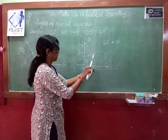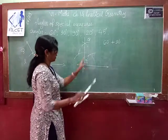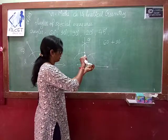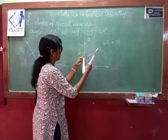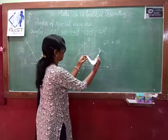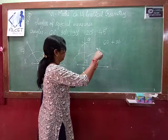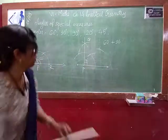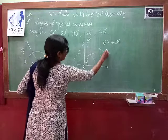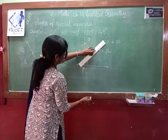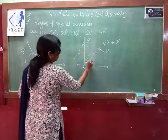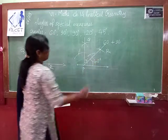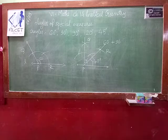To bisect the 90 degree angle, take the full measurement from one arm to the other and draw an arc. Then from the other point draw another arc. You get one intersecting point — join it to the vertex. This angle is now 45 degrees — the bisector of 90 degrees. This is how we do the bisection of a given angle.